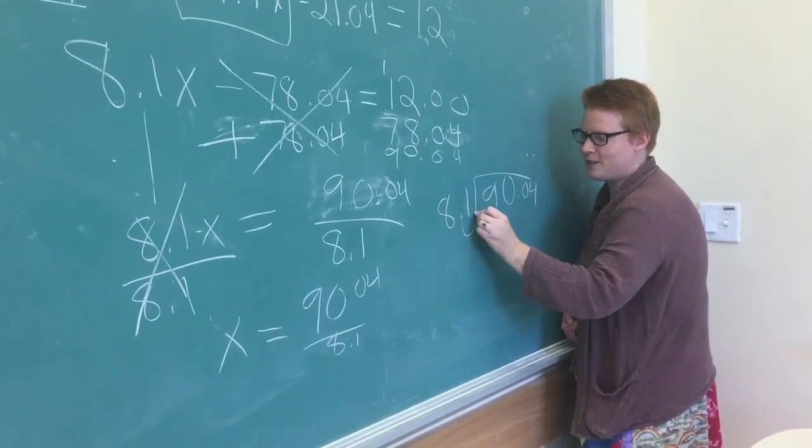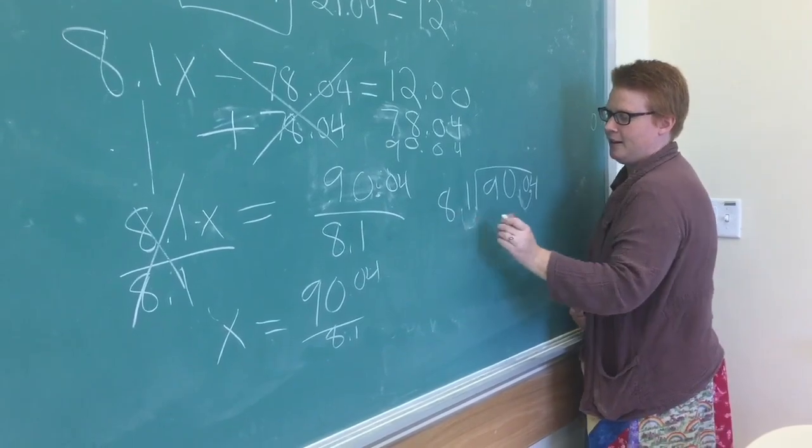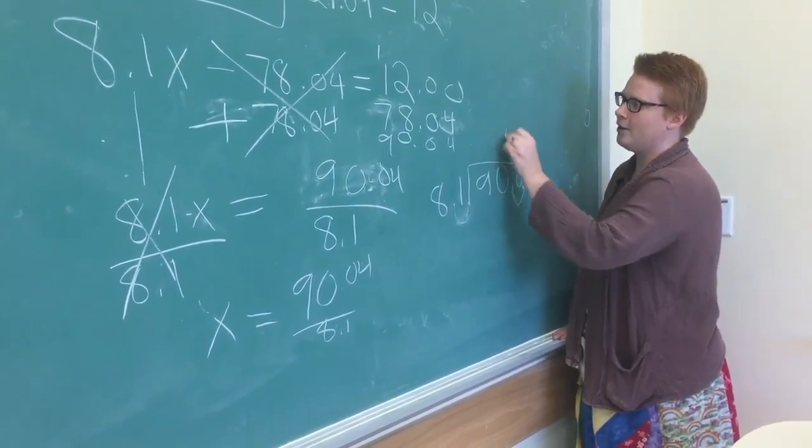Alright, you're going to move this decimal place over and move that decimal place over. I can do that. 80 to 90 can't go. 81 to 90? Oh yeah, I can go once.